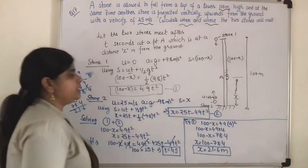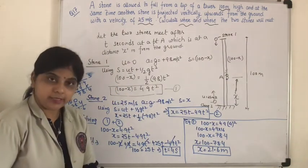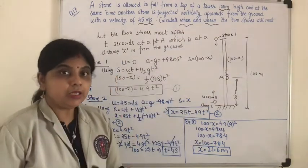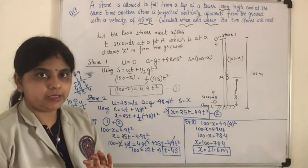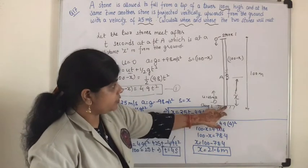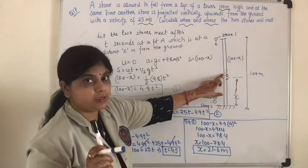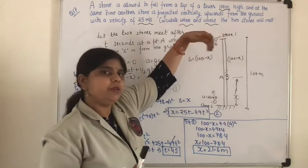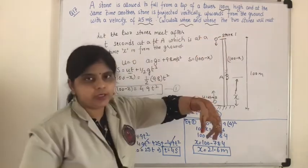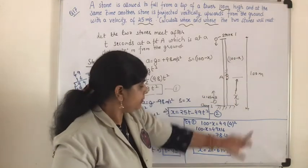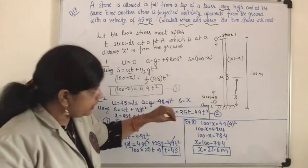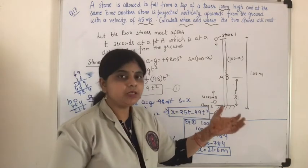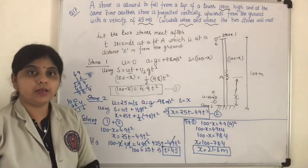So we can conclude: the two stones — one dropped and one thrown vertically upwards — will meet after 4 seconds at a distance of 21.6 meters from the ground. x was measured from the ground, which is why we state it as 21.6 meters from the ground. If asked from the top, it would be 100 minus 21.6. I hope this question is clear to you all.